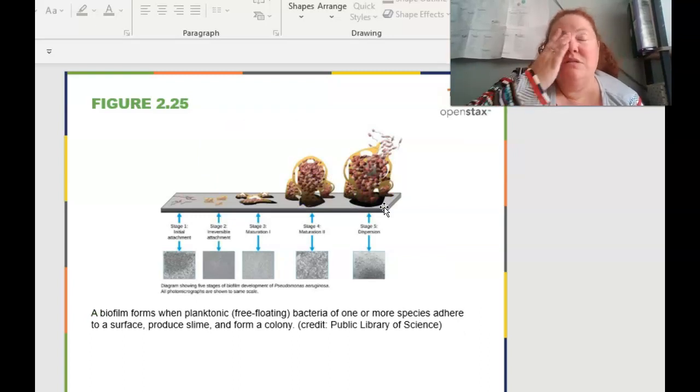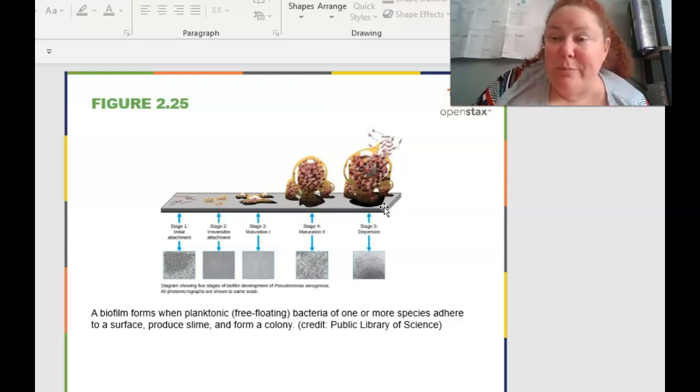So what is biofilm? Since a lot of those different questions just talked about biofilm, biofilm forms one free-floating bacteria of one or more species adhere to surface, produces a slime and forms a colony. So this is like pond scum, but also, you know, if you have sweaters that grew on your teeth because you didn't brush your teeth for the weekend and it's kind of like gross and that's biofilm too.